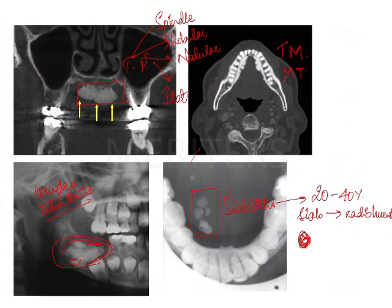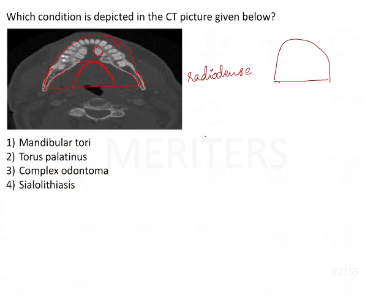Mandibular tori — or tori in general — have been asked in multiple MCQs and are a favorite for examiners. They can twist the question in multiple ways: they could say a hamartomatous lesion seen in the midline of the palate causing problems in denture fabrication, to which the answer is torus palatinus. Or they could say bony overgrowths present above the mylohyoid line in the region of the premolars — answer: torus mandibularis. They could also give a histological picture of bone-like structures on the lingual surface of the mandible above the mylohyoid line in the premolar region — again, torus mandibularis.